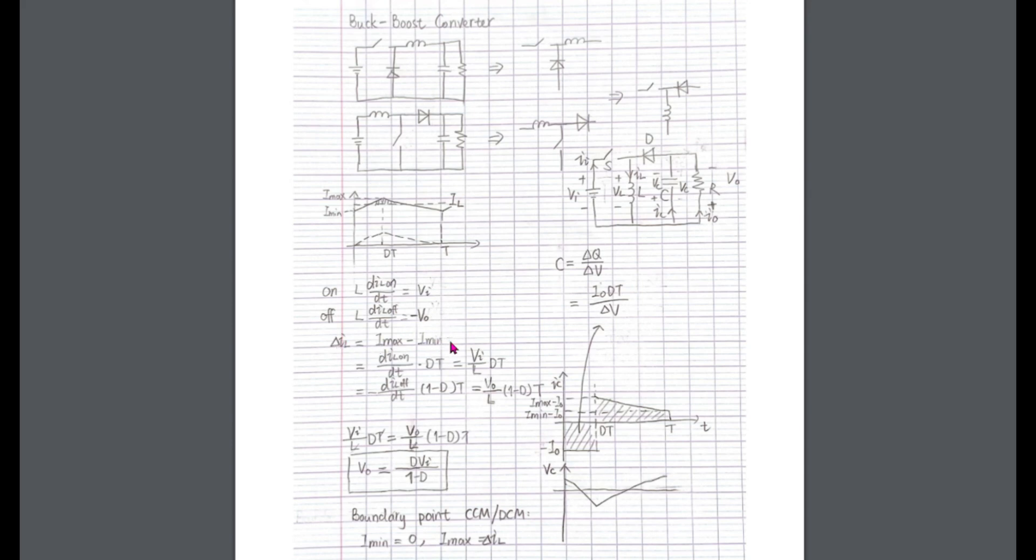Since Imax can be calculated with the slope of this on-phase line multiplying this time dt, the same way we can get the ripple current on the off-phase. It equals this inverse slope times dt. And we remove all the L and t.